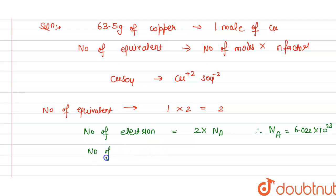So we have the number of electrons is equal to 2 multiplied by 6.022 into 10 power 23. And on solving this we get this is 12.044 multiplied by 10 power 23.